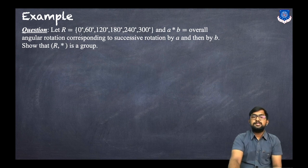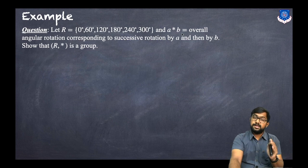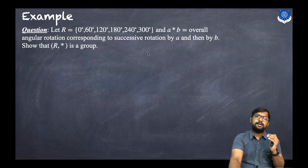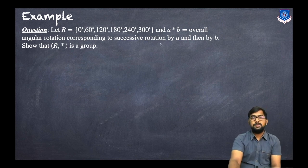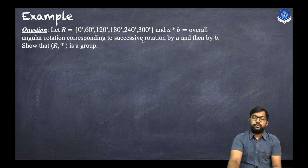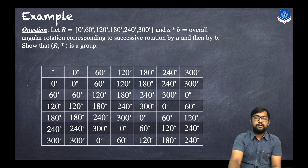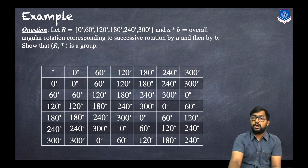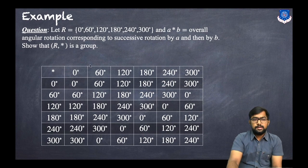Now let us discuss another example. R is given as the set {0°, 60°, 120°, 180°, 240°, 300°}, where the operation a star b is defined as the overall angular rotation corresponding to successive rotation by a and then by b. We need to show that (R, star) is a group. To do this, we construct a table. The rows and columns are the six elements: 0, 60, 120, 180, 240, 300.